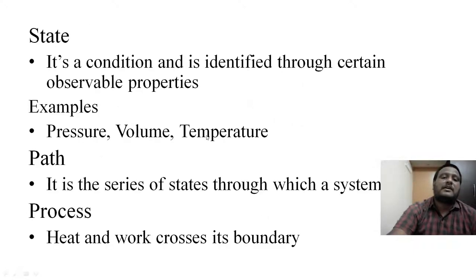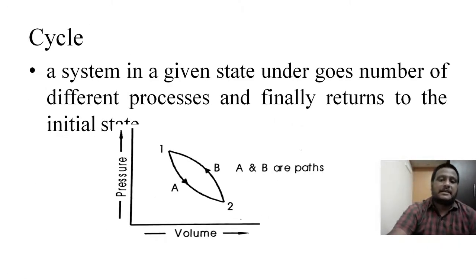We need one more PV diagram to explain this cycle. Consider an example. You go from home to college through some path. Again, you may move from college to home, but using a different path. This is what we are going to call a cycle. That is why, when a system undergoes a number of different processes and finally returns to the initial state, it is called a cycle.